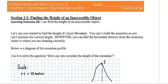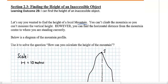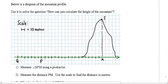This is section 2.3 where we're trying to find the height of an inaccessible object, meaning it's an object you can't actually reach the top of. Let's say you want to find the height of a local mountain. You can't climb that mountain so you can't measure that vertical height. However, you can find the horizontal distance from the mountain center to where you're standing currently.